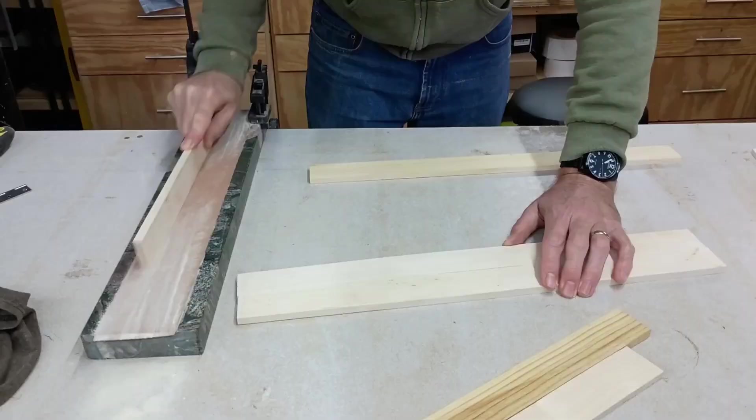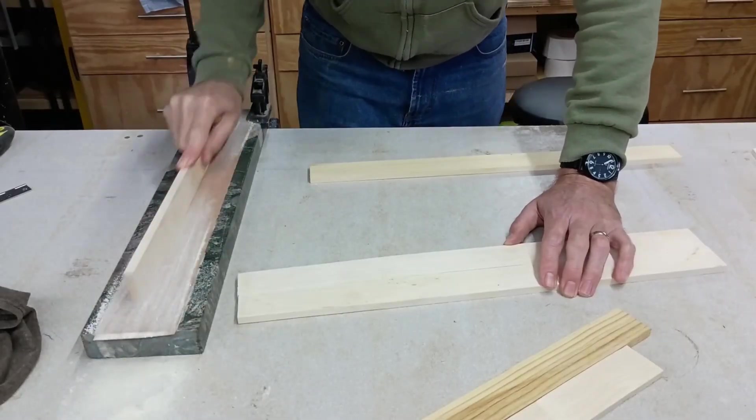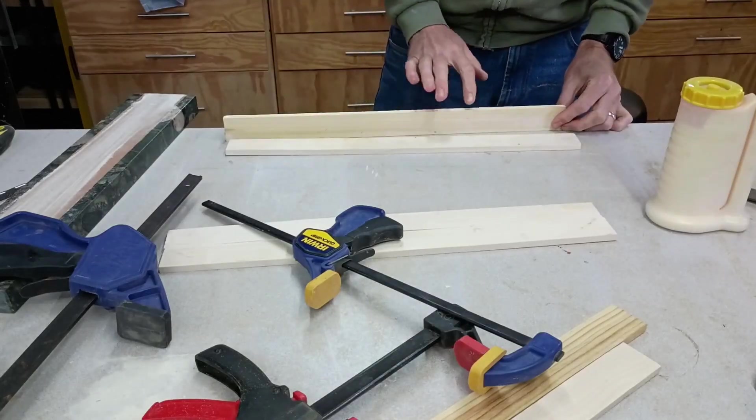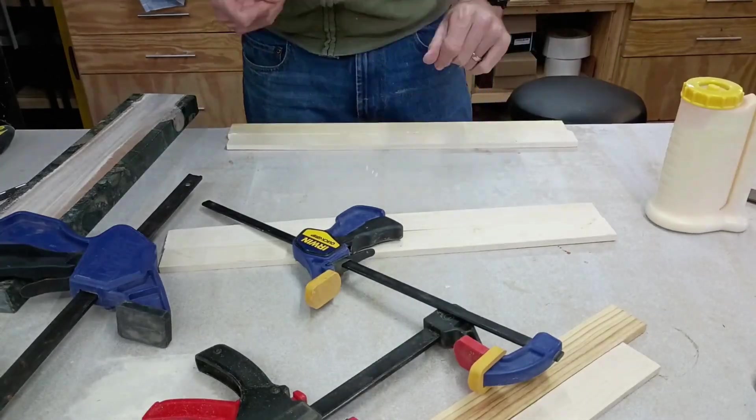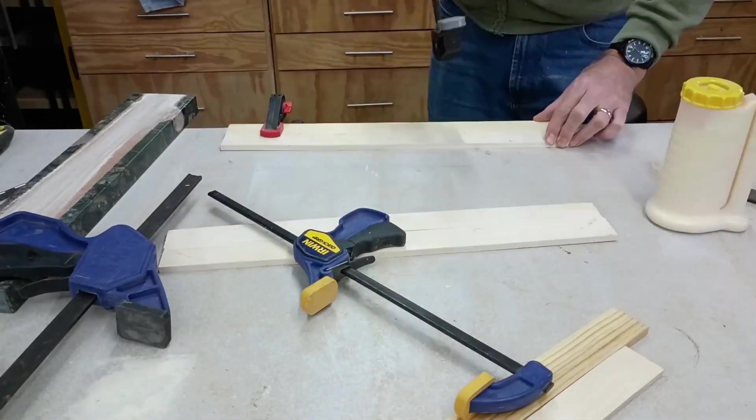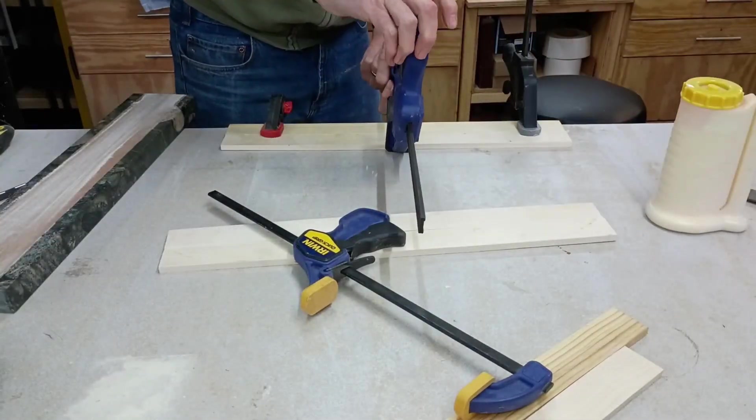I start with what I call the poor man's planer. If you put some sandpaper on some ultra flat marble, you can flatten them out and get a pretty tight joint. All I'm doing here is taking two cutoffs from pine 2x4s and gluing them together to get a three inch strip of pine.